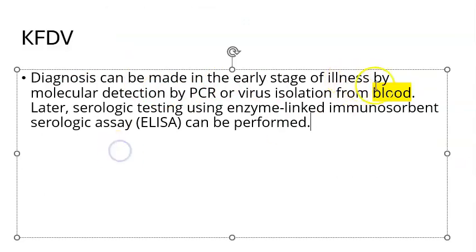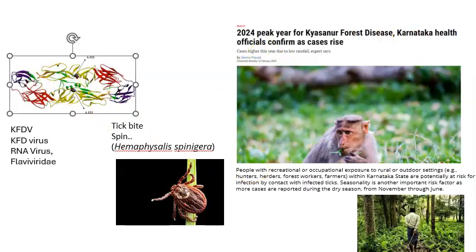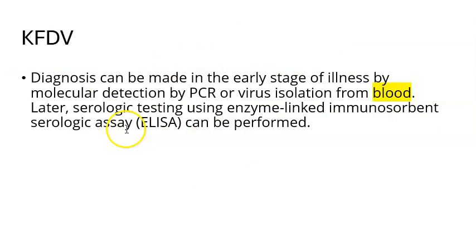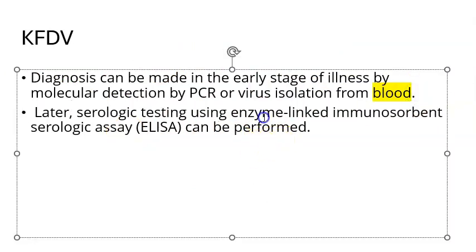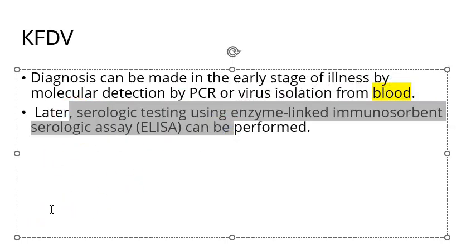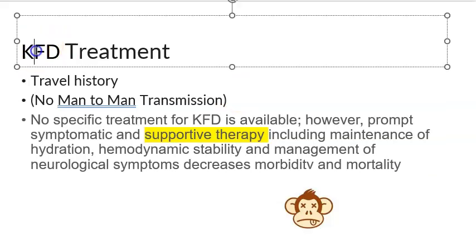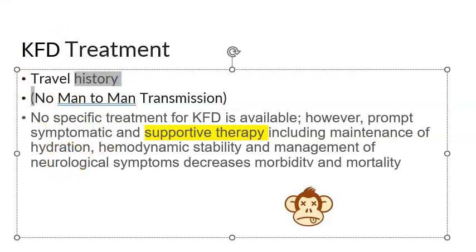For diagnosis, a blood sample is taken and the virus itself can be detected, or PCR (Polymerase Chain Reaction) is performed to detect the nucleic acid or protein sequences. Serology using antigen-antibody detection via ELISA is also a standard diagnostic method, with appropriate positive and negative controls in the laboratory.